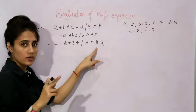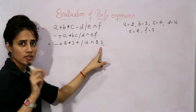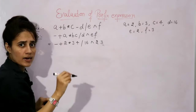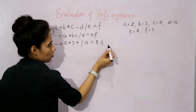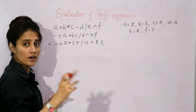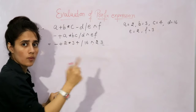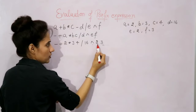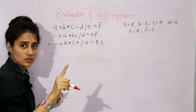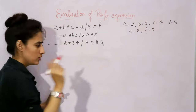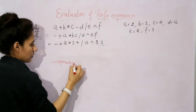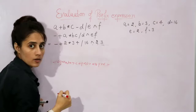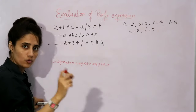The first step to evaluate this expression without stack: scan this expression from right to left. In case of prefix, we scan from right to left, and in case of postfix, we scan from left to right. While scanning right to left, find out the first operator. After that operator, find out the two operands immediately next to it. Once you find this pattern — operator, operand, operand — you can evaluate that expression.